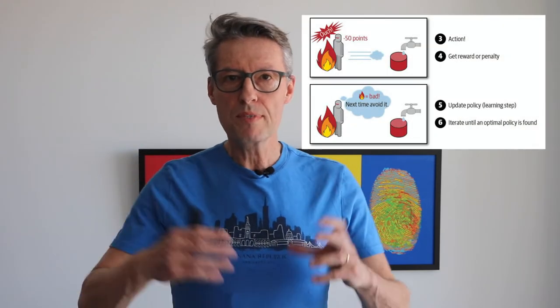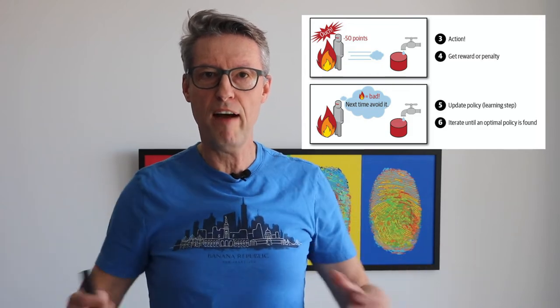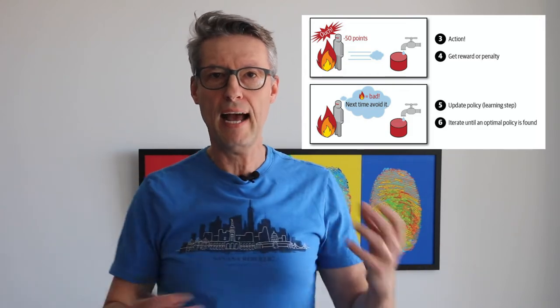With these interactions — receiving some rewards or receiving some penalties — the algorithm starts to learn and understand the environment and the kind of actions that are in the direction of the objective you want, or on the opposite side, and then it adjusts.